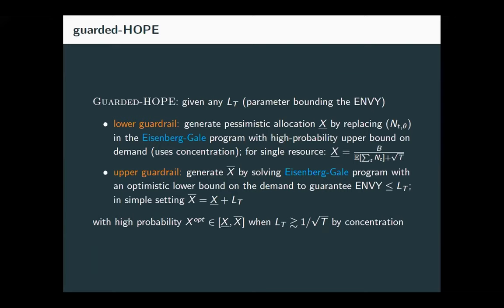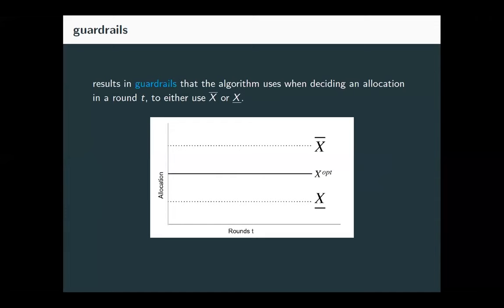Now let me describe the algorithm, called guarded hope. It starts by computing guardrails. The lower guardrail is a pessimistic allocation solving the Eisenberg-Gale program with the upper bound on demand — asking: if the maximum number of people arrive, what's the minimum I must guarantee everyone? The upper guardrail ensures the envy bound L_T is met — in the simple setting, it's the lower guardrail plus L_T. This defines the range within which allocations must fall.